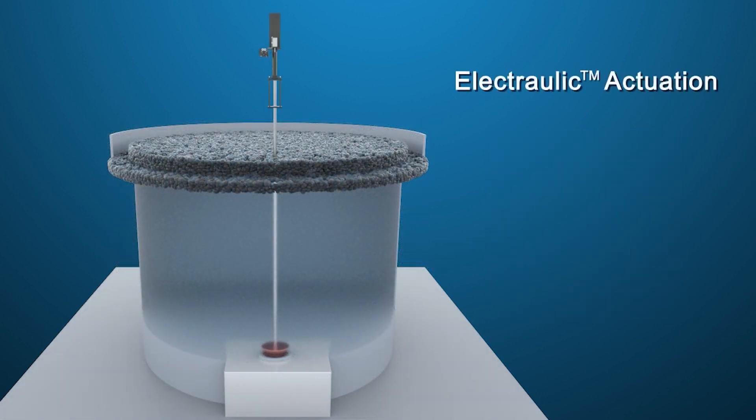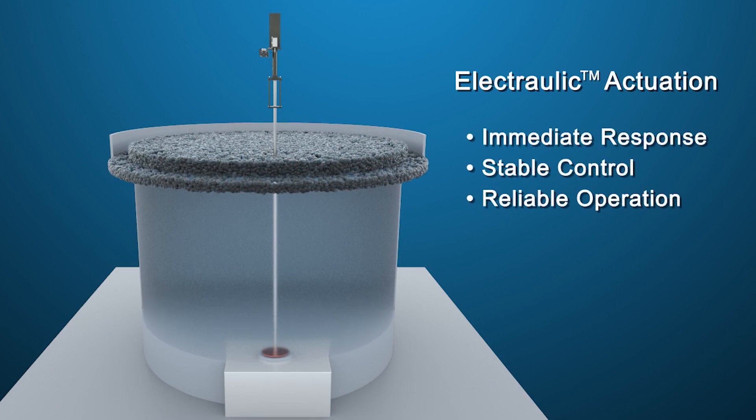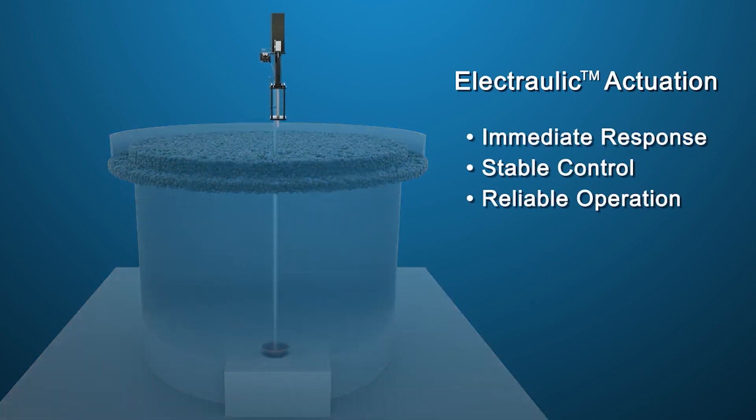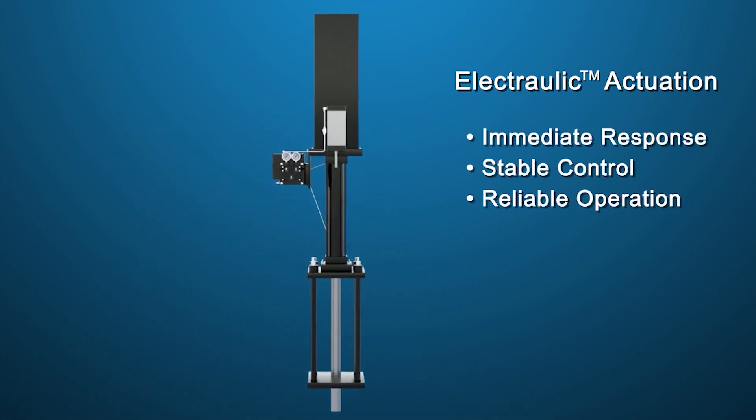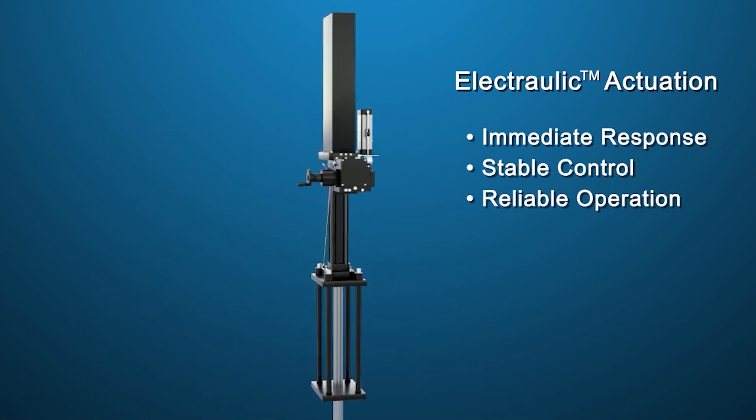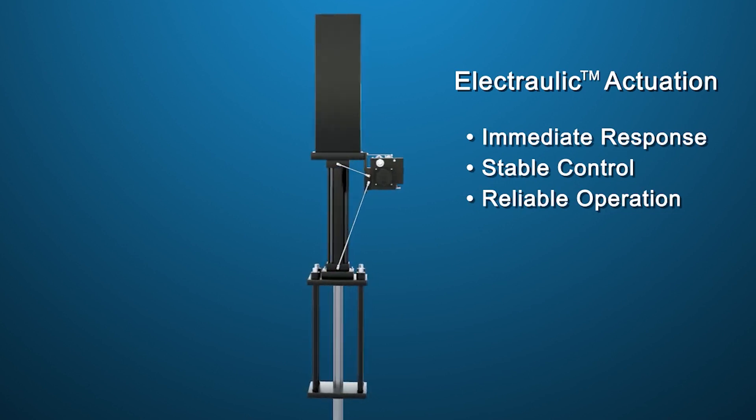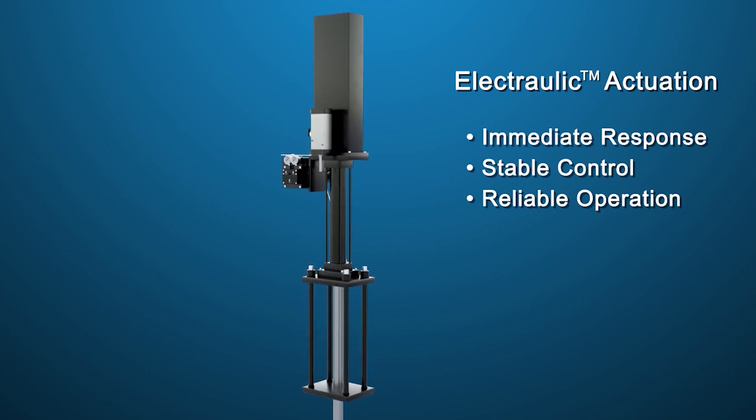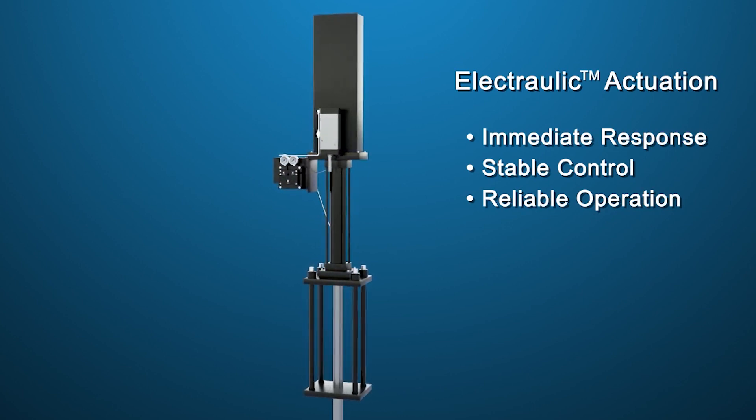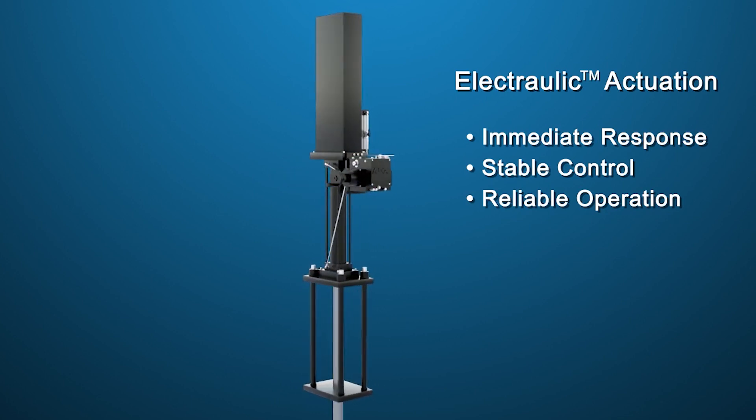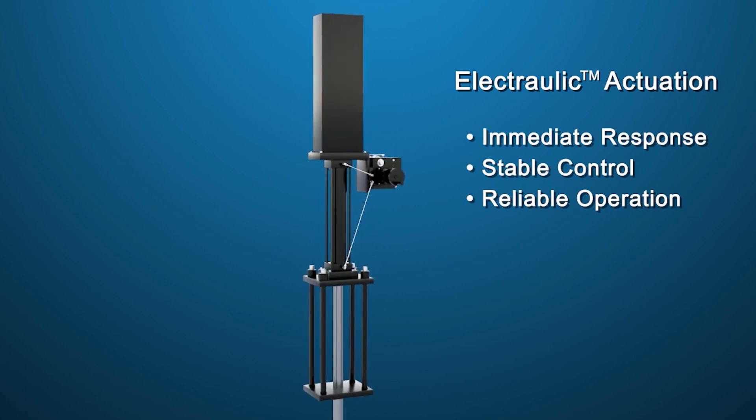RECSA Electrolic Actuation provides immediate response with stable, repeatable control. The Electrolic Actuator utilizes self-contained, incompressible hydraulics and is resistant to the suction forces of the dart valve. This results in stable slurry transfer out of the cell and prevents unnecessary wear of the valve seat. Dart valve maintenance intervals are extended, leading to higher unit availability.